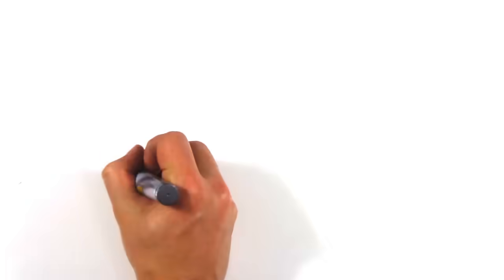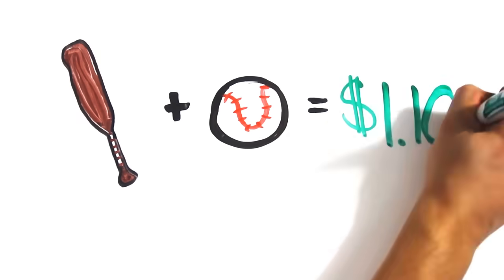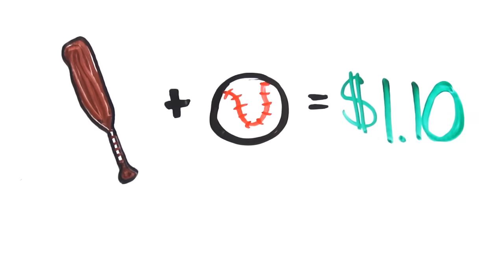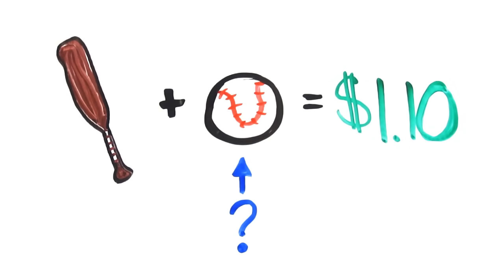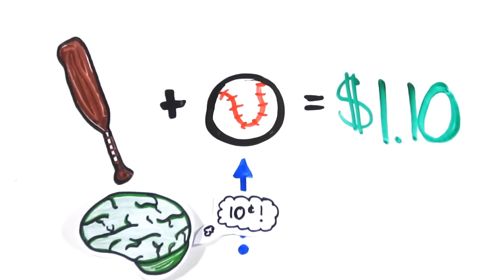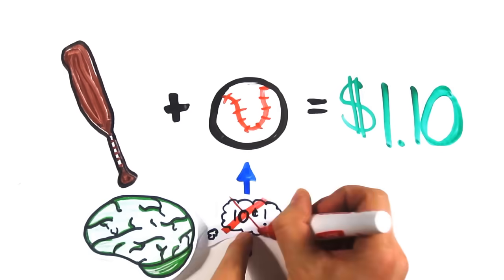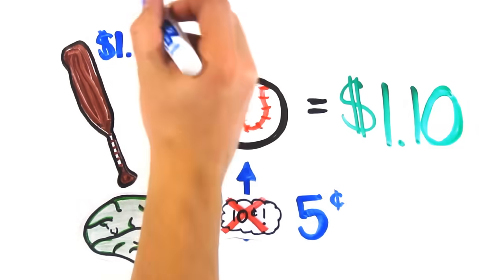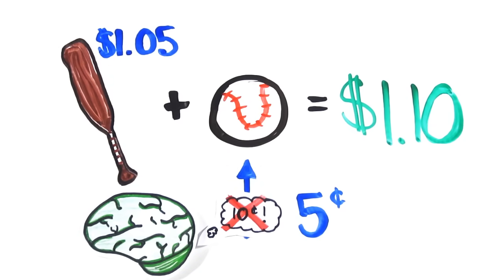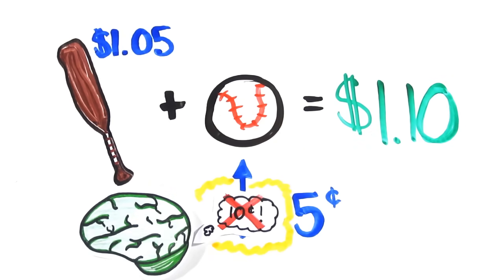Listen to the following puzzle. A bat and a ball cost $1.10. The bat costs $1 more than the ball. How much does the ball cost? Chances are, your System 1 intuition was yelling 10 cents, but this appealing System 1 answer we know is wrong. In fact, the correct answer is 5 cents. Even if you worked out the correct answer, you likely thought of 10 cents along the way.